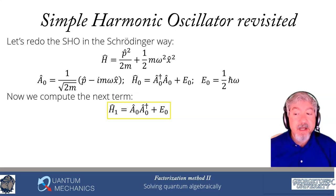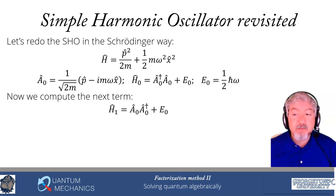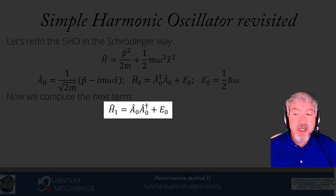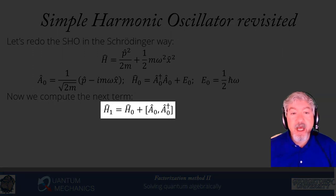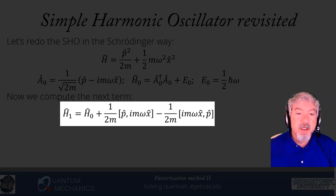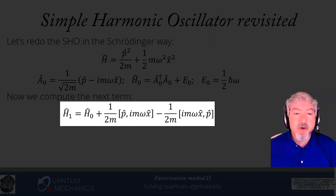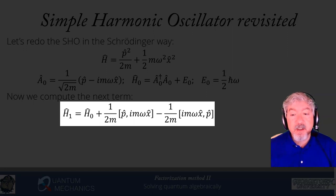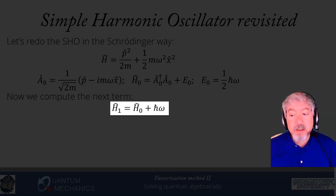Now we want to compute the next term. H1 is A0A0† plus E0 — the operators are in the opposite order. The easiest way is to use the add-zero trick: add and subtract A0†A0, group A0†A0 + E0 as H0, and we're left with the commutator [A0, A0†]. Substituting in what A0 and A0† are, I get a factor of 1/(2m), the commutator of p̂ with imωx̂, and −imωx̂ with p̂. Using [p̂, x̂] = −iℏ and [x̂, p̂] = iℏ, both commutators each give ℏmω/(2m) = ℏω/2, and the net result is +ℏω.